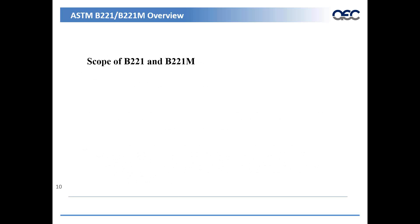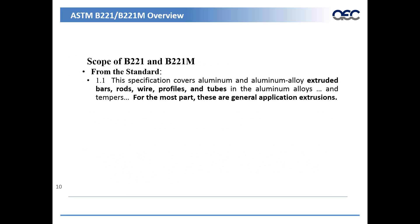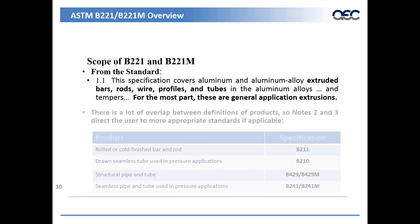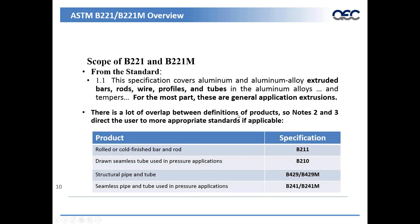B221 covers basic extrusion shapes including bars, rods, wires, profiles, and tubes — general application extrusions. There are other specifications more appropriate for certain specific applications, and B221 actually directs you to them. If you want a rolled or cold-finished bar or rod, B221 will direct you to ASTM B211. For drawn seamless tube used in pressure applications, see B210. Structural pipe and tube, look at B429 or B429M. Seamless pipe and tube used in pressure applications: B241 and B241M.